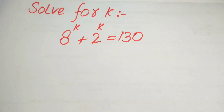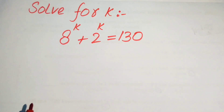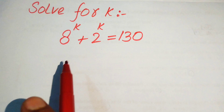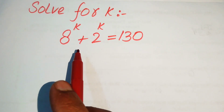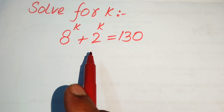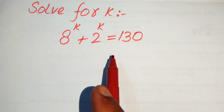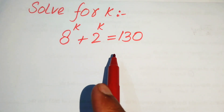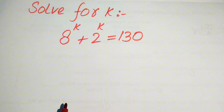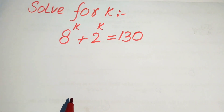Hello everyone, welcome to solve this nice Math Olympiad exponential equation problem. Here we have 8 to the power of k plus 2 to the power of k equals 130, and we solve this problem for the values of k.